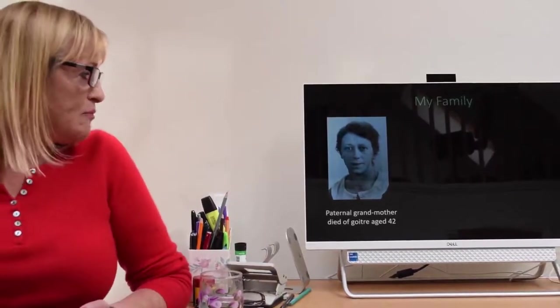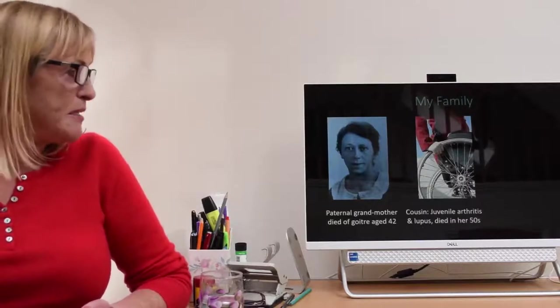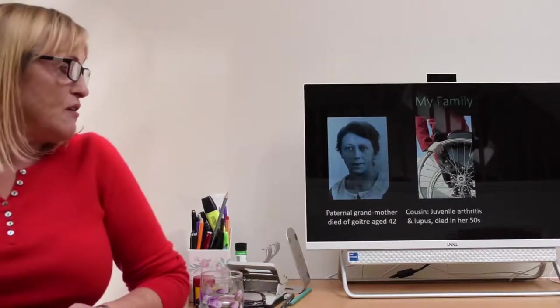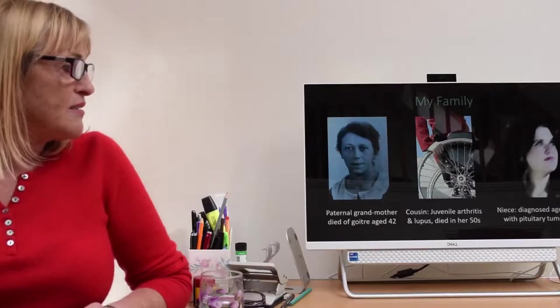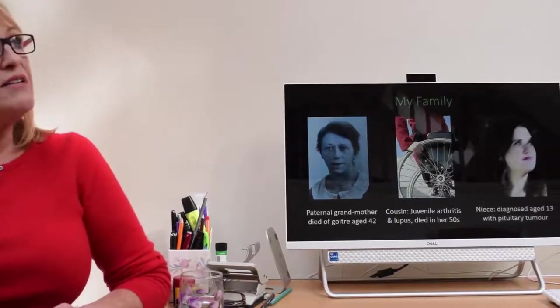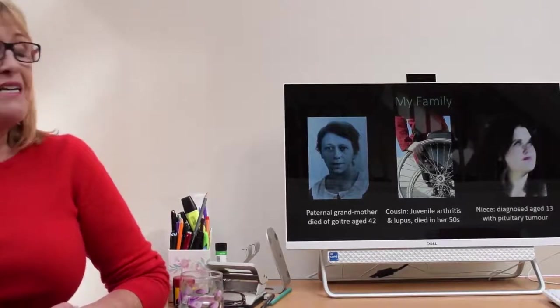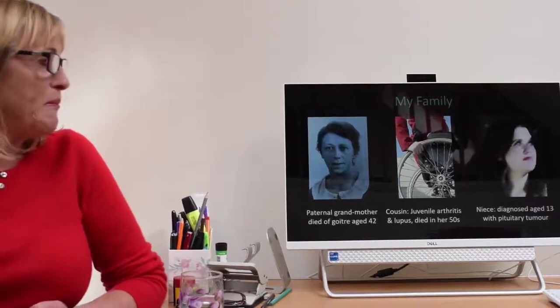I started to reflect back on things. This is my father's mother and she died of an untreated goiter when she was about 42. My father's sister was diagnosed with juvenile arthritis when she was three, ended up in a wheelchair and died in her 50s. This is my niece who was diagnosed at 13 with a pituitary tumor. Every other member of my family has got a thyroid disorder. I reflected on why we were all so sickly since our genes had survived for thousands of years.